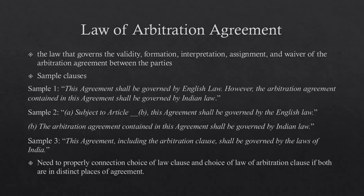So, how to draft these clauses? Often, these clauses go hand in hand with the choice of law clause. For instance, the provision could say: 'This agreement shall be governed by English law. However, the arbitration agreement contained in this agreement shall be governed by Indian law.' Alternatively, it could be drafted as: 'Subject to Article [X], sub-article (b): (a) This agreement shall be governed by English law. (b) The arbitration agreement contained in this agreement shall be governed by Indian law.'